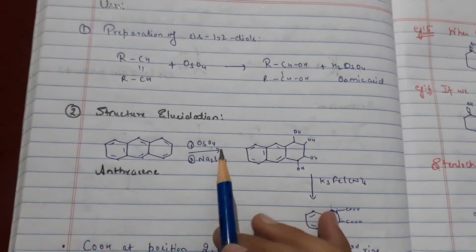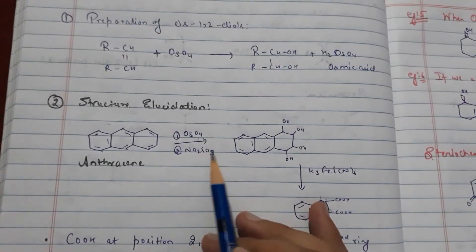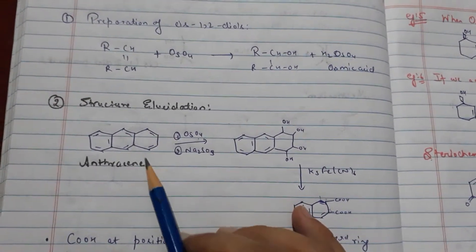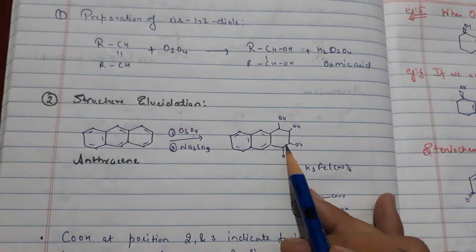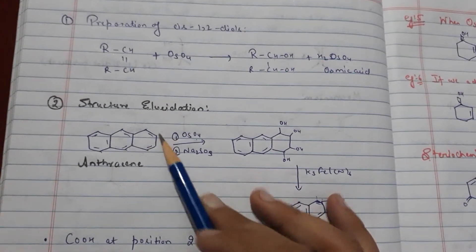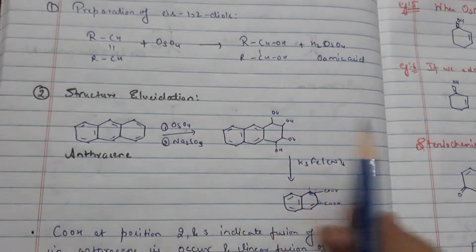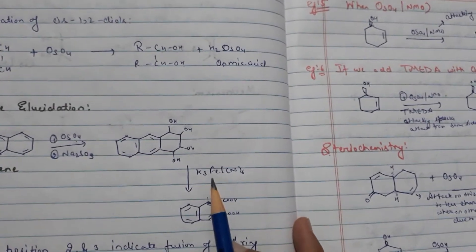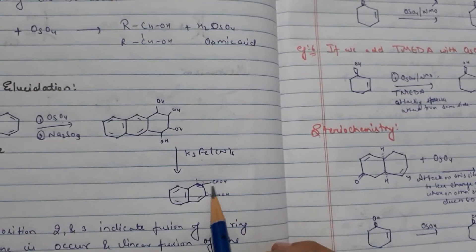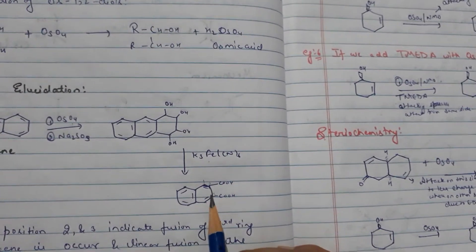Like anthracene with osmium tetraoxide and Na2SO3. Na2SO3 will go into 4 positions. On K3Fe(CN)6 it will reduce this ring and form C-OH, C-OH at 2nd and 3rd position.